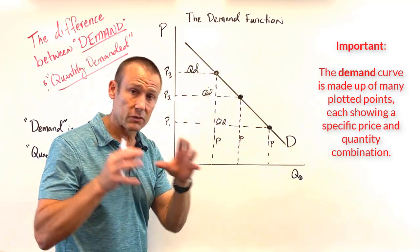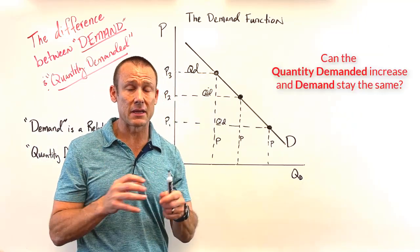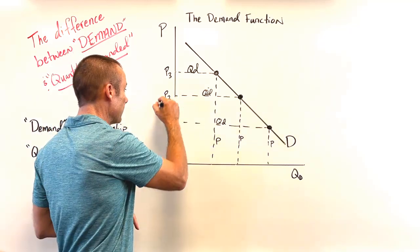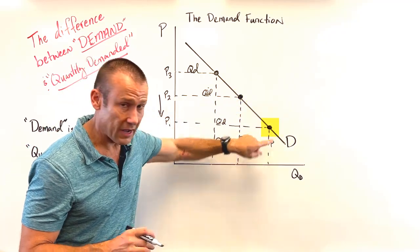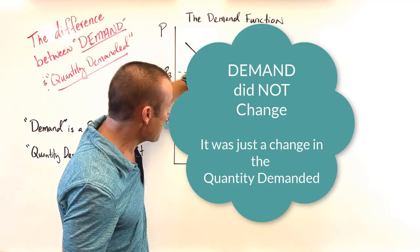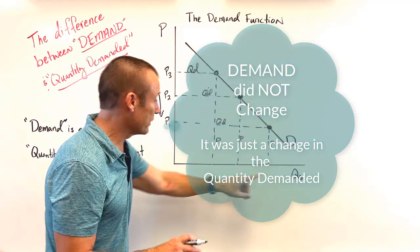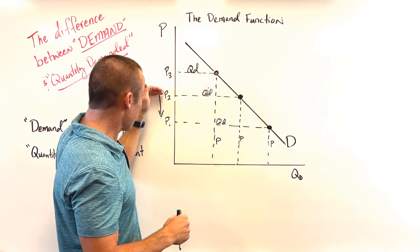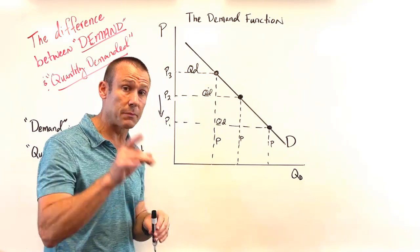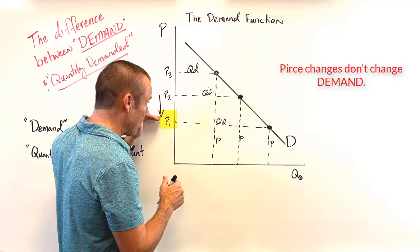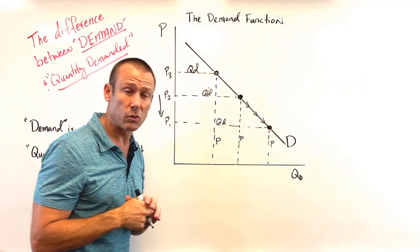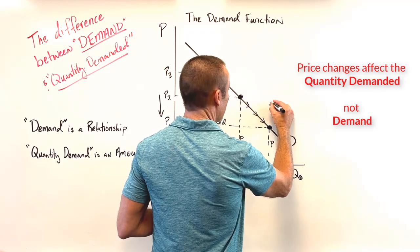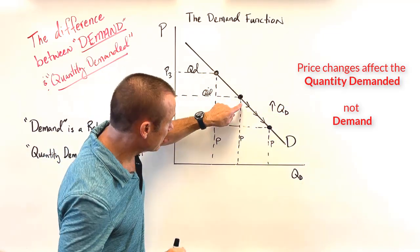Can the quantity demanded increase and yet demand not change? Absolutely. If price goes down — say from P2 to P3 — we move from one dot to another dot along the curve. Is demand changing? No. Demand is the relationship between QD and P, showing all the different QDs at different prices. If we just have a price decrease, demand does not change, but quantity demanded will increase. We call this a movement along the demand curve.